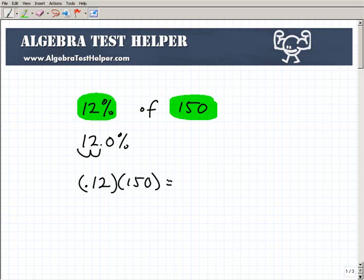So 0.12 times 150, real easy. Let's go ahead and do it on our calculator, 0.12 times 150 equals 18. So 18 is 12% of 150.